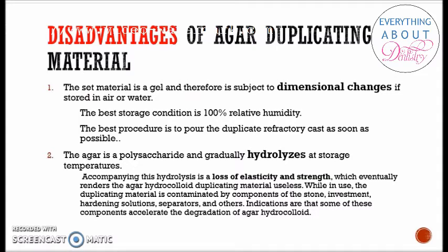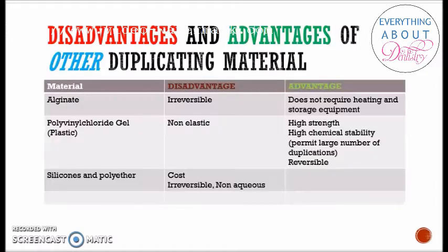The second disadvantage of agar is that since it is a polysaccharide, it gradually hydrolyzes at storage temperatures, and this hydrolysis may cause loss of elasticity and strength. For other duplicating materials: alginate's disadvantage is that it is irreversible, but its advantage is that it requires no heating or storage equipment. Polyvinyl chloride gel is non-elastic but has high strength, is reversible, and has high chemical stability, permitting a large number of duplications. Silicone and polyether materials are expensive and irreversible, and they are non-aqueous.